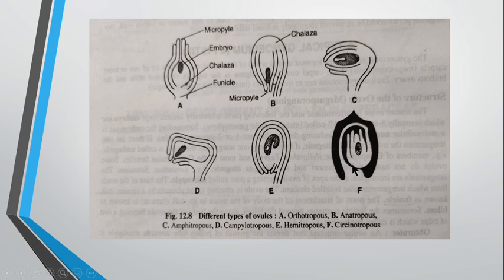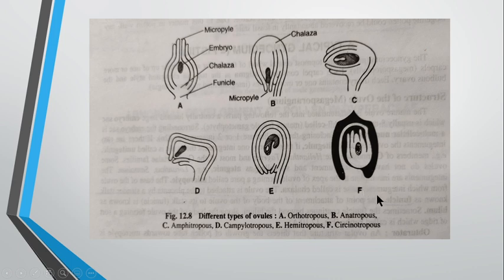The sixth type is known as circinotropous. In this case, the funicle — shown as the blackened portion — is very long and forms a ring-like structure, completely covering the ovule. This type of structure is known as the circinotropous ovule.